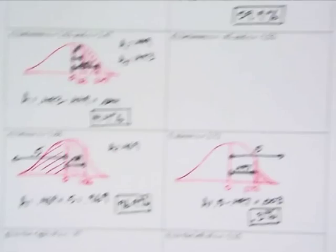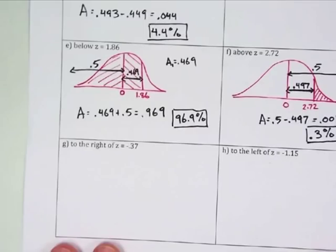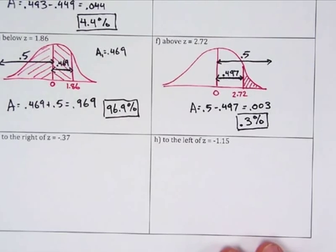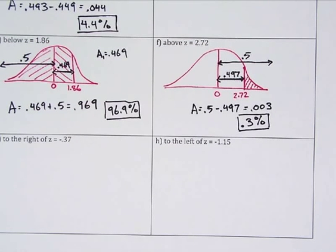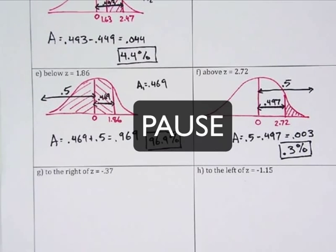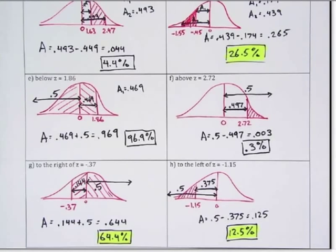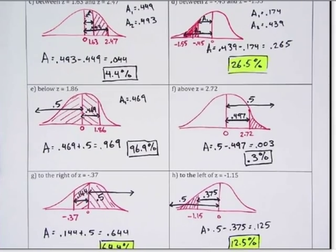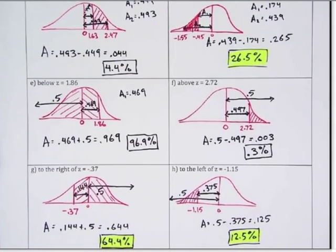Now go ahead and finish up D, G, and H. Here are the answers: For D, you should have gotten 26.5%. For G, 64.4%. And for H, 12.5%.